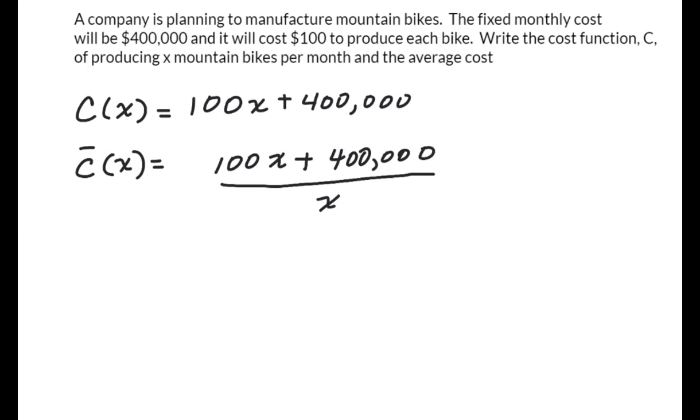So then they have you go through a bunch of examples. They say, for example, find C̄ of 500, the average cost of 500. And if you plug 500 into x there and there, you should get $900, which says when you produce 500 bicycles, because remember that x is the bikes, then it costs, this is going to be your cost on average, $900 to produce each bike.